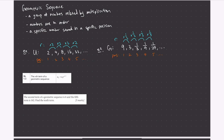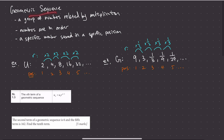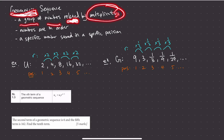A geometric sequence is very similar to an arithmetic sequence in the sense that it's a group of numbers that are related. However, for a geometric sequence, it's related by multiplication. In an arithmetic sequence, the numbers are related by addition or subtraction, but in a geometric sequence it's only related by multiplication.